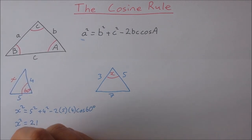So x squared is 21. x is going to be the square root of 21 which is approximately equal to 4.58.